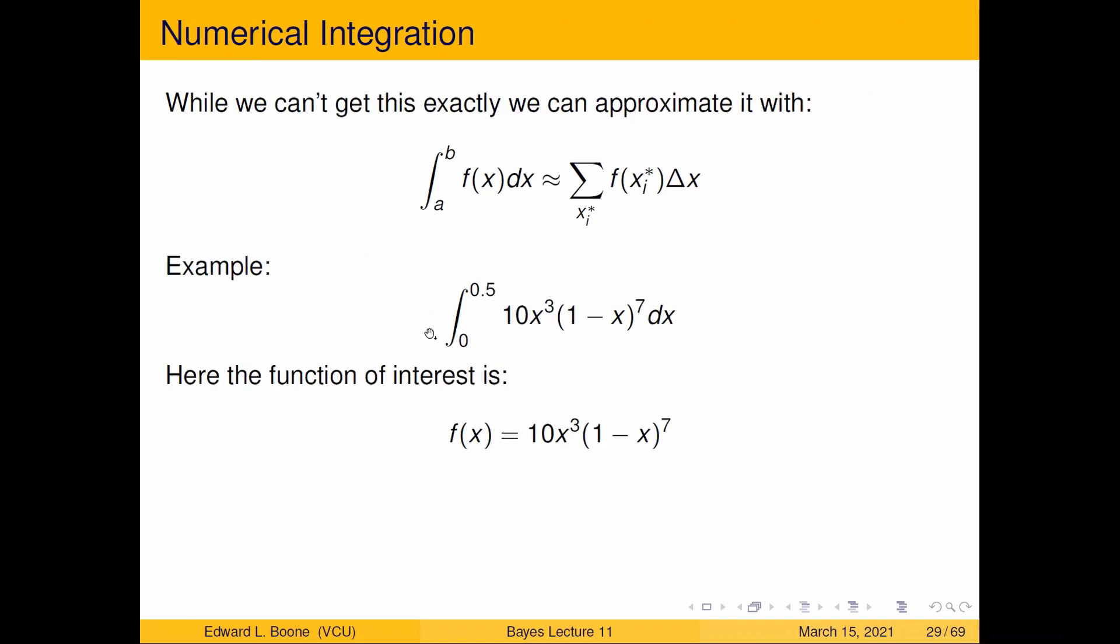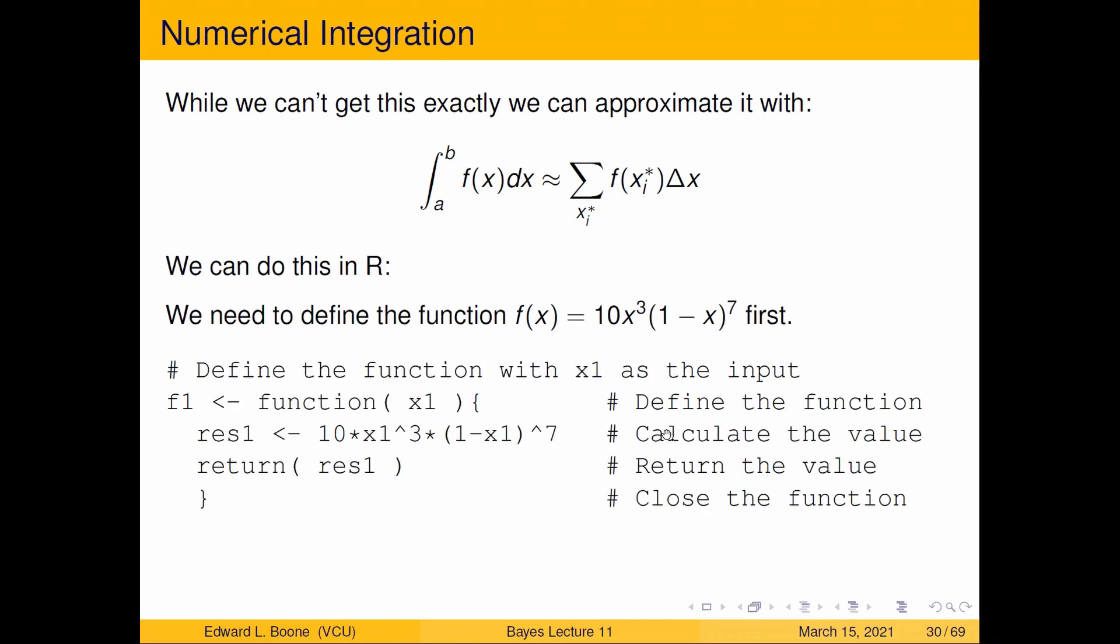Okay, so here's what we're going to do. Now this is not the function that is in our posterior distribution but it's really close. So here our function of interest is 10x^3(1-x)^7. In our posterior distribution the seven would be replaced by 250 and we'll do that in the next video. So we're going to define our function here. In R I'm going to name this f1.